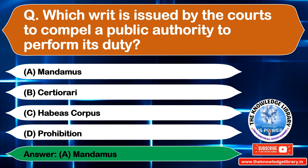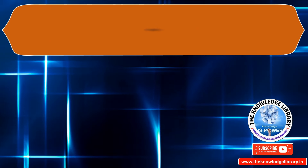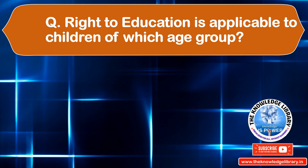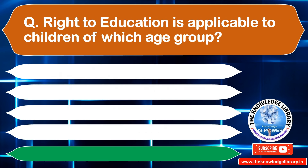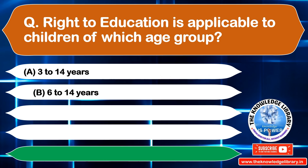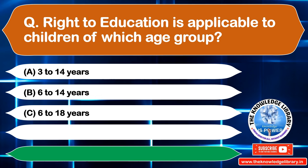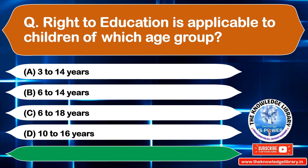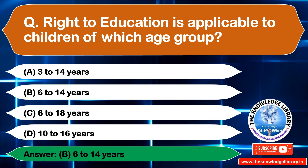The next question is: right to education is applicable to children of which age group? Option A: 3–14 years, Option B: 6–14 years, Option C: 6–18 years, Option D: 10–16 years. The correct answer is Option B: 6–14 years.